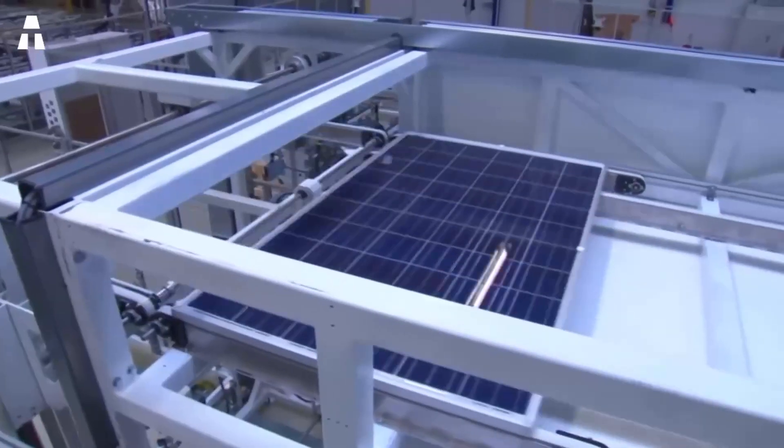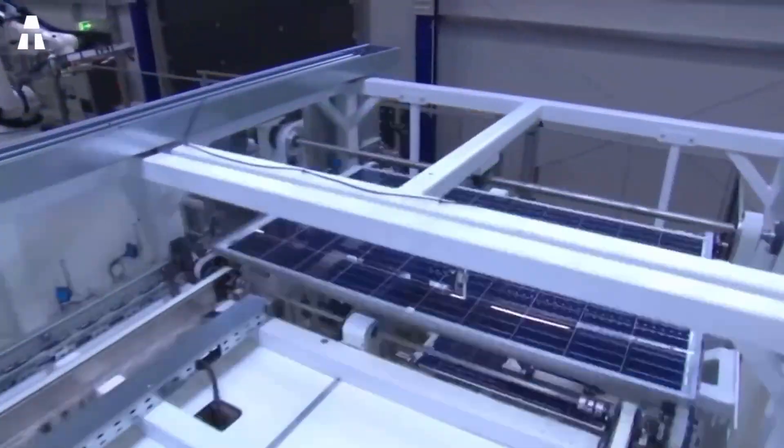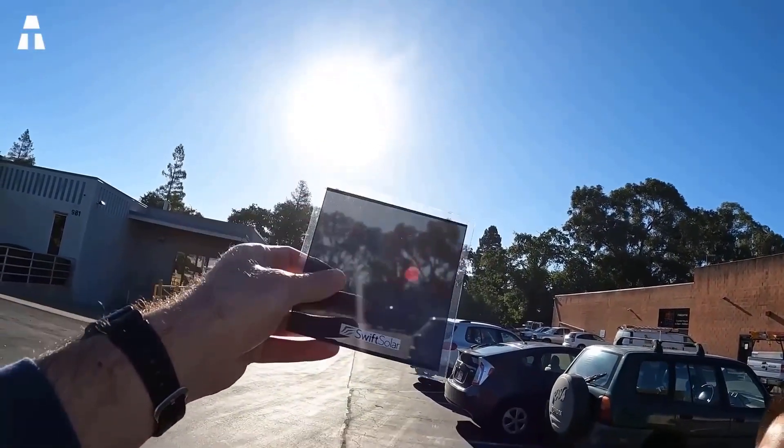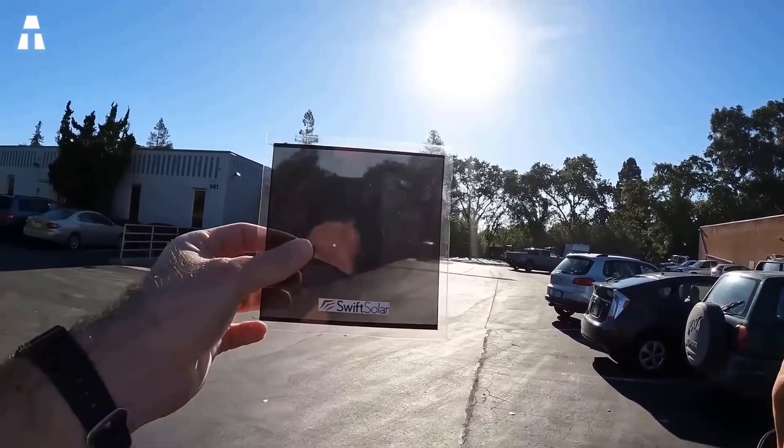Research by the American company Swift Solar has uncovered a new material that could revolutionize this industry, especially to address the defects of traditional photovoltaic panels. Before detailing this discovery, it is necessary to quickly recall the basic principles of the functioning of a solar panel.